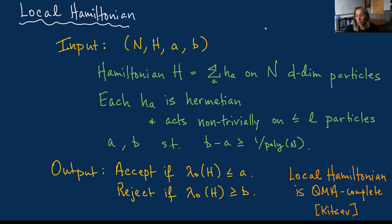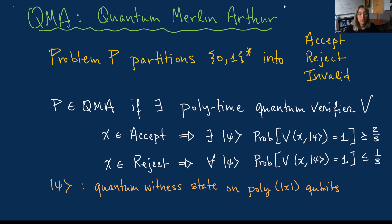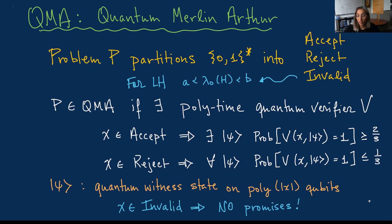When Kitaev introduced the local Hamiltonian problem, he also proved that it is QMA-complete. The class QMA is in some sense a quantum version of NP, but with important differences. QMA is a class of promise problems: a problem partitions binary strings into accept, reject, and invalid classes. A problem is in QMA if there's a polynomial-time quantum verifier such that for accept instances there exists a quantum witness causing acceptance with high probability, and for reject instances no quantum witness causes acceptance. The quantum witness is a state on a polynomial number of qubits. For invalid instances, there are no guarantees whatsoever. In the local Hamiltonian problem, an invalid instance would be one where the ground energy lies between the two given thresholds.